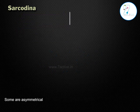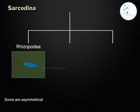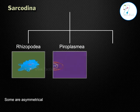Superclass 3: Sarcodina. Some are asymmetrical. It is divided into three classes: Class 1 Rhizopoda, Class 2 Pyroplasma, and Class 3 Actinopoda.